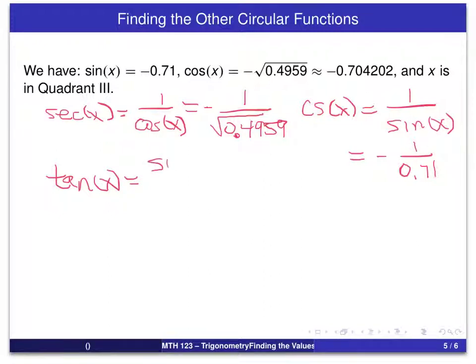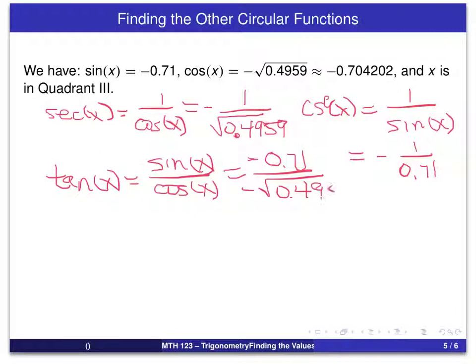Tangent of x is sine of x over cosine of x. We have those values. Notice that sine of x is minus 0.71 and cosine is minus a square root. If we substitute those in, we've got a negative divided by a negative. So tangent of x will be 0.71 divided by the square root of 0.4959.